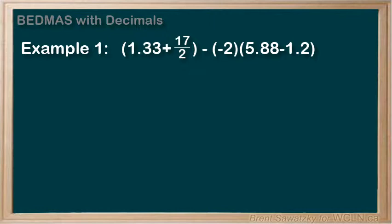Example 1: 1.33 plus 17 over 2 minus negative 2 times in brackets 5.88 minus 1.2. Thinking BEDMAS, we start with the B, brackets.